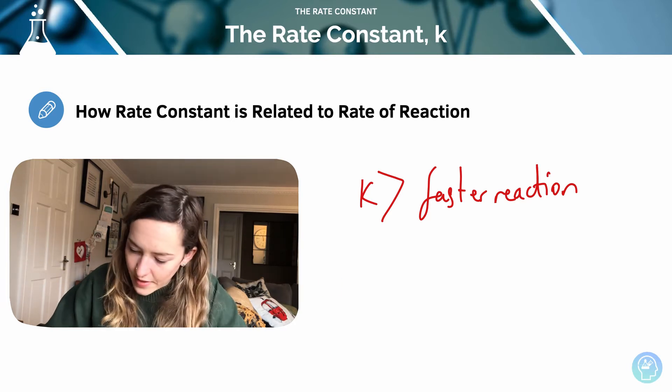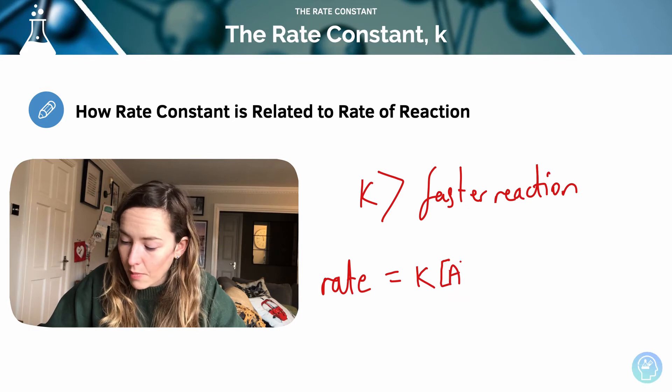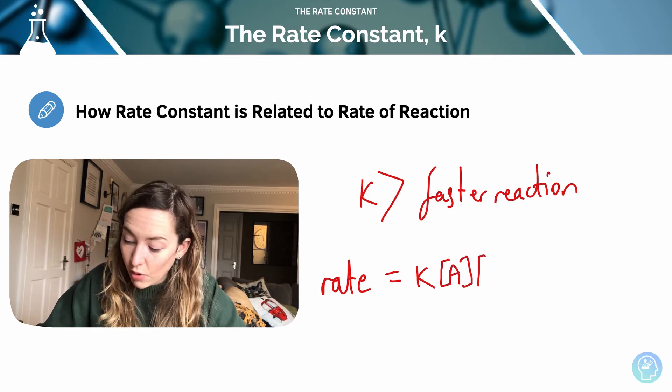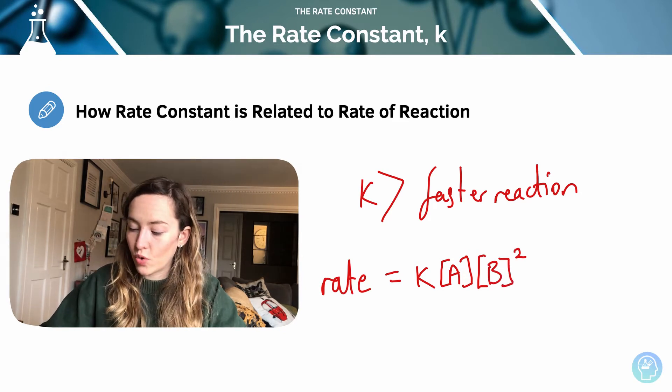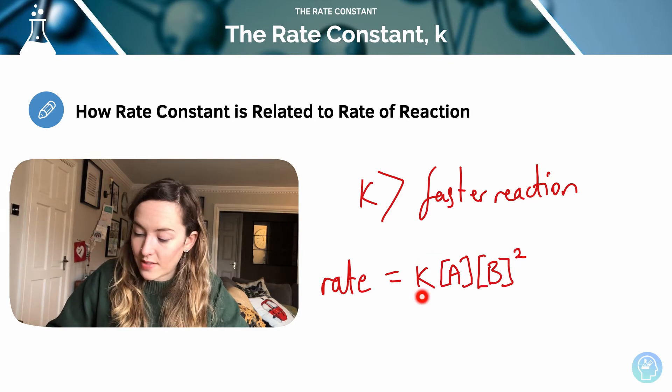And here's where we find it in our rate equation. So rate is going to be equal to k, our rate constant, times the concentration of a reactant A to the power of nothing in this particular case and then B which is second order. So overall the order is 3 and there is the value that we're interested in at the moment, k.